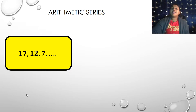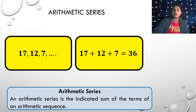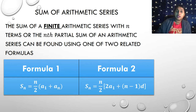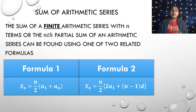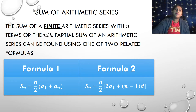Let's move on to arithmetic series. A series is the sum — so 17 plus 12 plus 7 equals 36. An arithmetic series is the indicated sum of an arithmetic sequence. The sum of a finite arithmetic series can be found using two related formulas. The key word is finite; an infinite arithmetic series cannot give us a true sum with these formulas.